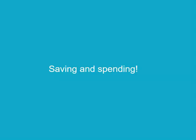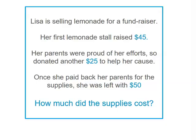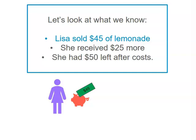In this example we're going to be looking at saving and spending. Lisa's selling lemonade for a fundraiser and her first lemonade stall raised $45. Her parents were pretty proud of her so they donated another $25. However, once she paid back her parents for the lemonade supplies she was left with $50. How much did the lemonade supplies cost? Let's look at what we do know: Lisa sold $45 of lemonade, she received $25 more from her parents, and then after her costs were deducted she had $50 left.